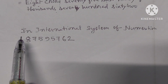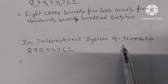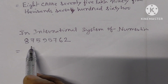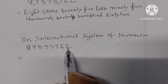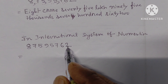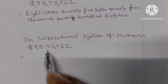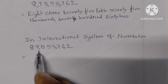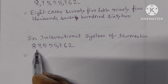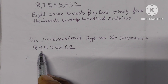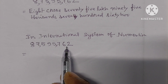Now we have to write this number in the international system of numeration. In the international system, the first comma comes after three digits from right to left, then after every three digits. So we write 87,595,762.